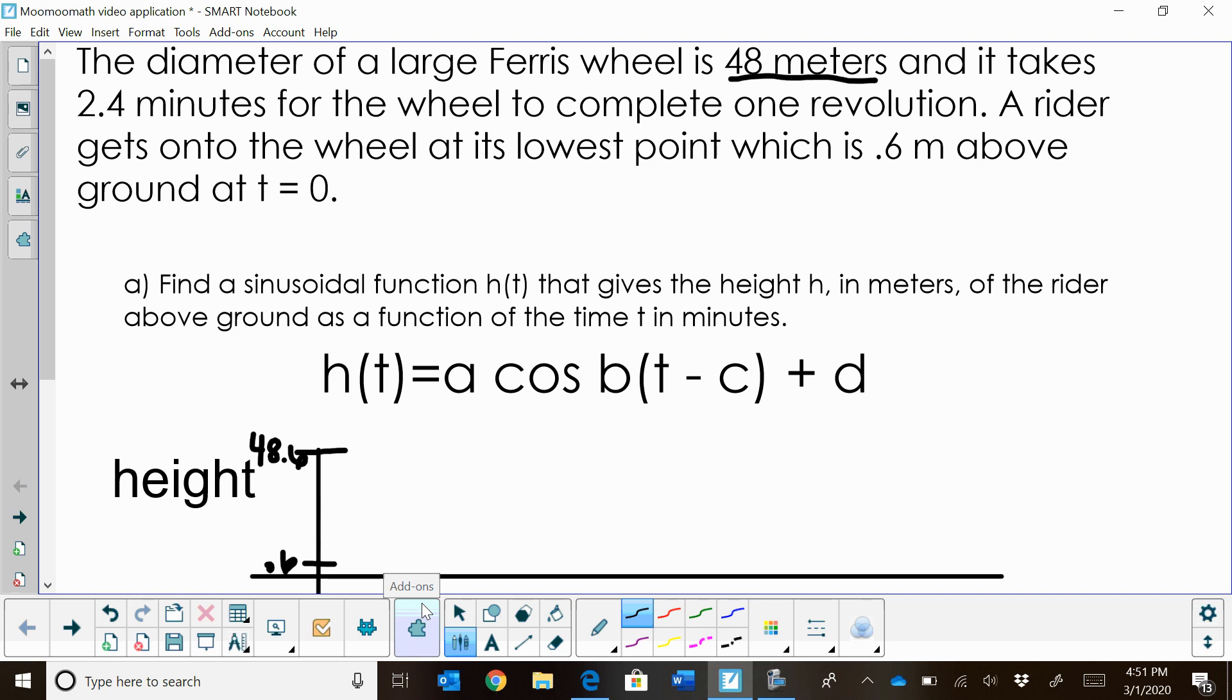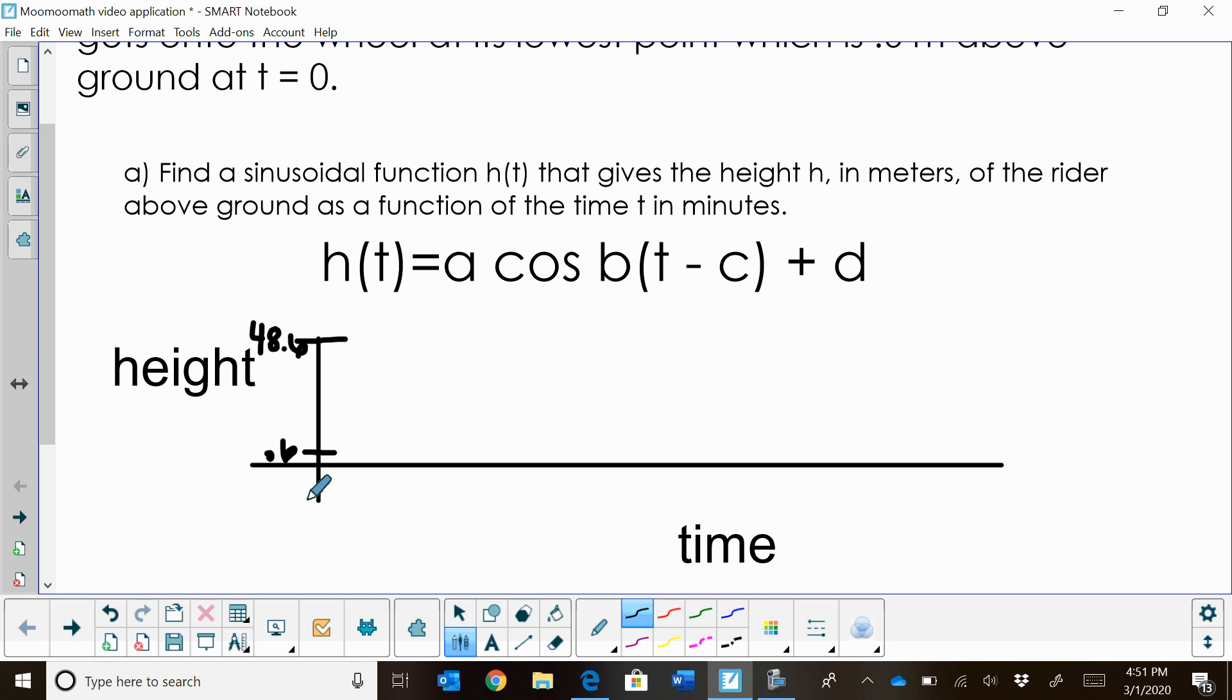Now I've got to draw one revolution, so you can see the sinusoidal graph. It takes 2.4 minutes to complete one full revolution. So that means, if this is time 0, at time 2.4, when we hit 2.4 minutes, we have completed one full cycle. That means I need to know where my halfway point is.